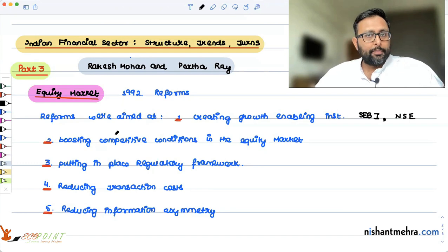Prices were shown, and people can understand which stock they want to buy and which stock they want to sell. So it is going to reduce the information asymmetry. This was an objective of the reforms in equity market.